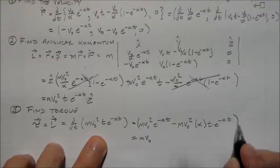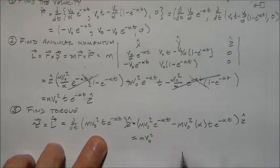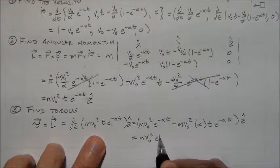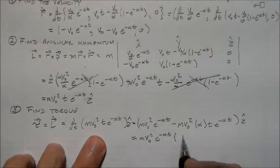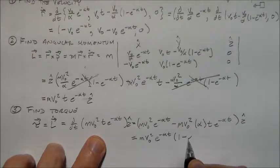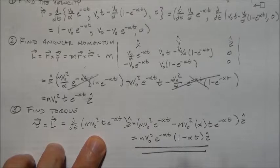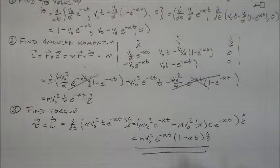So I can combine all that. And that's all in the Z direction. V naught squared E to the minus alpha T times 1 minus alpha T in the Z hat direction. So that's my torque. So just keep on going and you'll eventually get there.